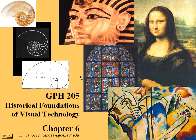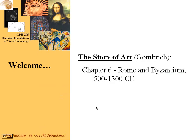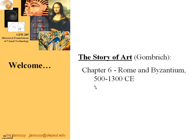Hi, this is Jim Janacy, and these are the lecture slides for Chapter 6 of the Gombridge textbook, The Story of Art. In this chapter, we're going to be taking a look at the Roman Empire in two parts: Rome, centered on that city, and Byzantium, centered on the city of Constantinople, sometimes known as Istanbul. We'll be looking at roughly the time period 500 to 1300, with more of it centered in 500 to 1000.